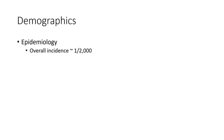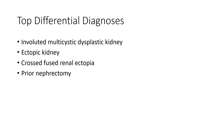Demographics and epidemiology: overall incidence is 1 in 2000. Top differential diagnosis includes involuted multicystic dysplastic kidney, ectopic kidney, crossed fused renal ectopia, and prior nephrectomy.